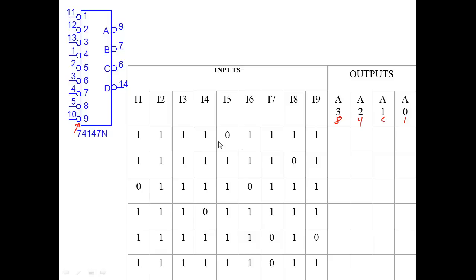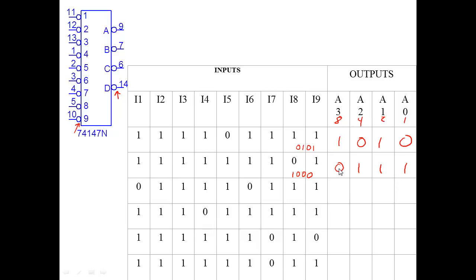For example, if the low is on the five input, we need to output binary five. Binary five is four plus one, so that's 0101. Since the chip has active low outputs, we invert that. For another example with eight: eight in binary is 1000, so we invert it to 0111. One reason for this is that zeros carry more current, so there may be a need to drive other chips with more current.